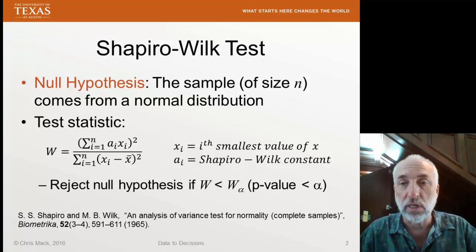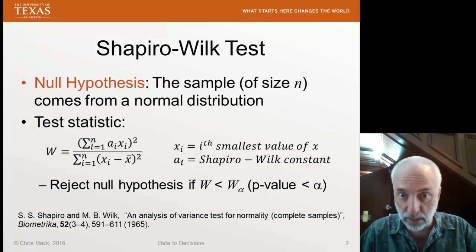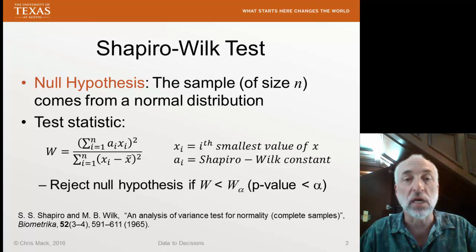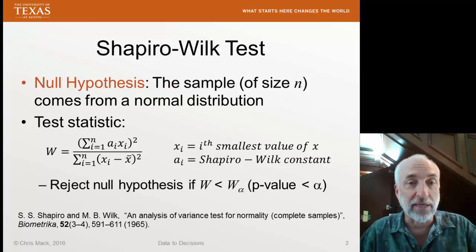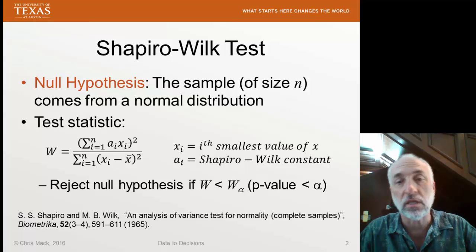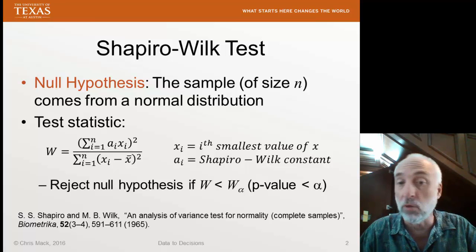To get these Shapiro-Wilk constants, we first sort or order all of our data from the smallest to the largest. So a1 is the constant used to multiply the smallest value of x, and a2 is the constant used to multiply the second smallest value of x, and so on. We calculate this statistic, and then we also have a set of critical values of this statistic for a given alpha, a given significance level. We reject the null hypothesis that the distribution is normal whenever W is less than this critical value.